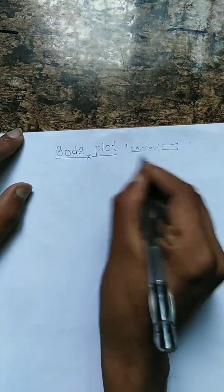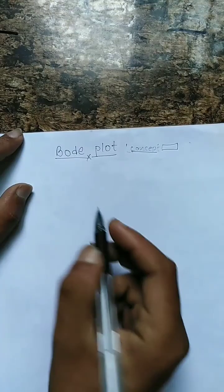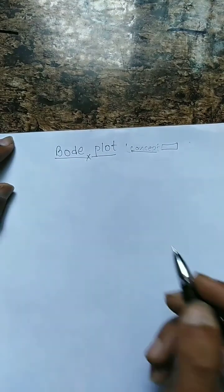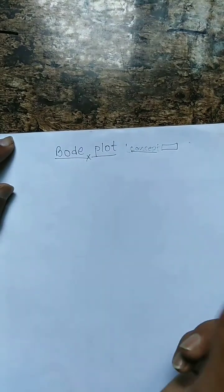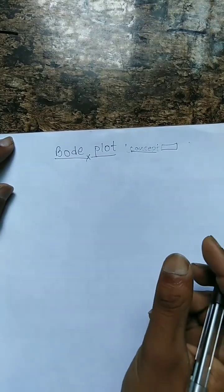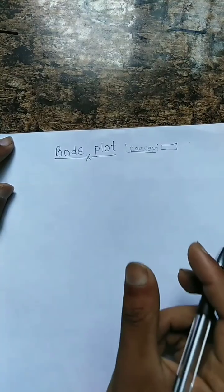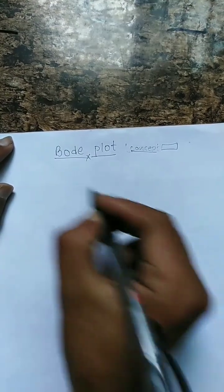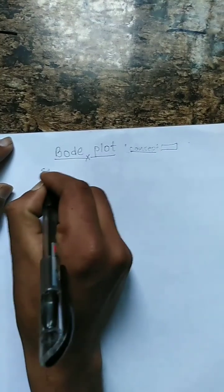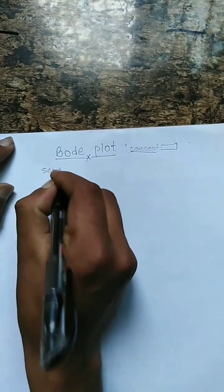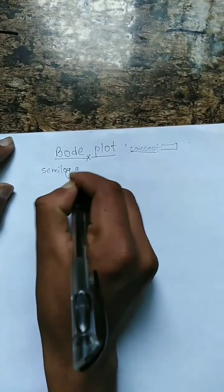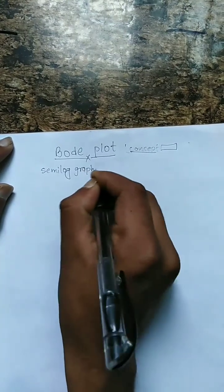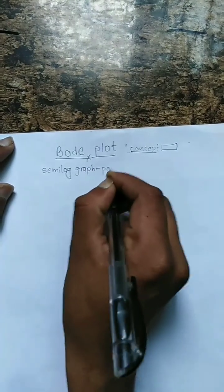Let's start with the concept of Bode plot or frequency plot. This is how the frequency varies. We have a Bode plot. A Bode plot is a semi-log graph paper. A semi-log graph paper is used in soft engineering.